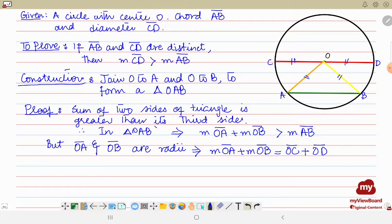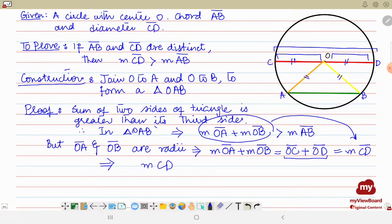Right, so if you see OC plus OD, what is this? OC is this, OD is this. So if we write the complete measurement it will be CD, measure CD. So instead of all of this we can write measure CD. So this implies that measure CD is greater than measure AB.